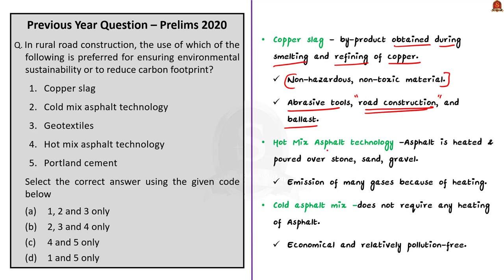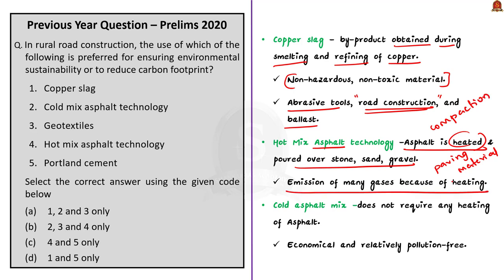Now let us move on to asphalt. Asphalt is one of the most popular paving materials in the world. There are two main options: cold mix and hot mix. In hot mix asphalt technology, asphalt is heated and poured over stone, sand, and gravel, then a heavy roller is driven over it to compact the road surface. This entire process results in emission of many gases because of heating, so this is not an environment friendly process. Unlike hot mix asphalt, cold mix asphalt does not require any heating, which makes it economical and relatively pollution free.